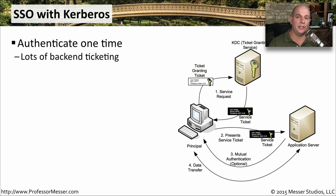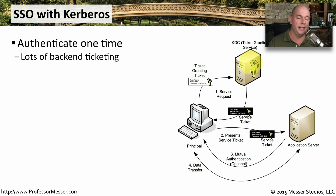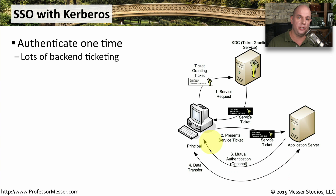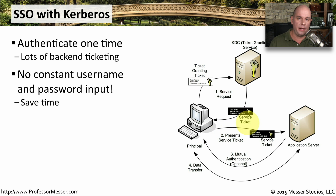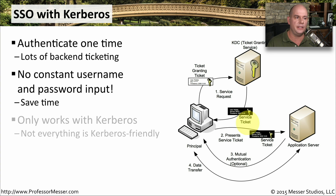Kerberos works behind the scenes using tickets for authentication and authorization. You first provide a ticket-granting ticket to a ticket-granting service, which includes your username, password, domain credentials, and other information. If authentication is correct, it provides you with a service ticket, which you then present to other servers and services on the network to prove your identity. This way, you don't have to enter usernames and passwords every time you connect to a new device.